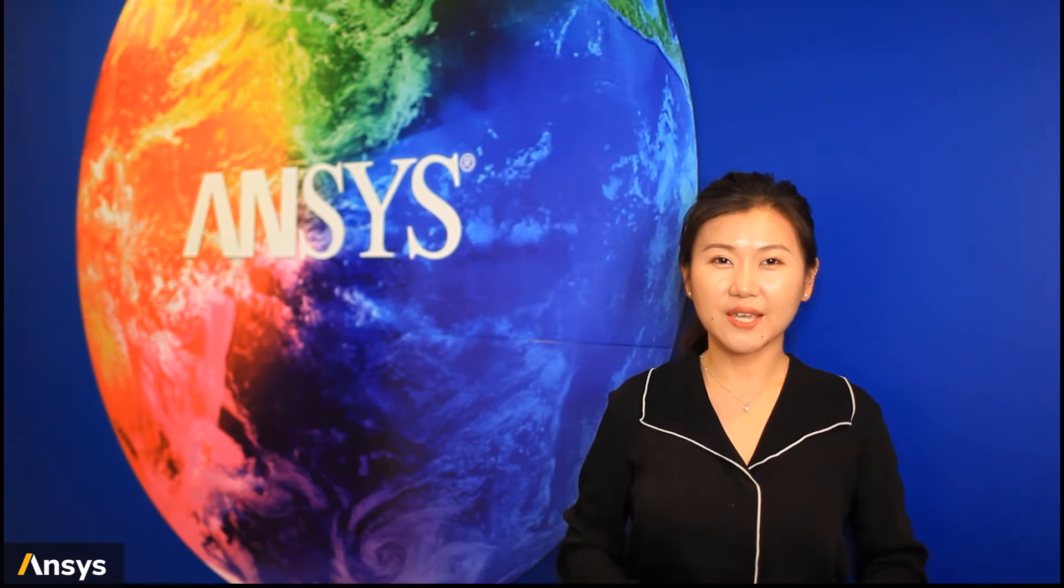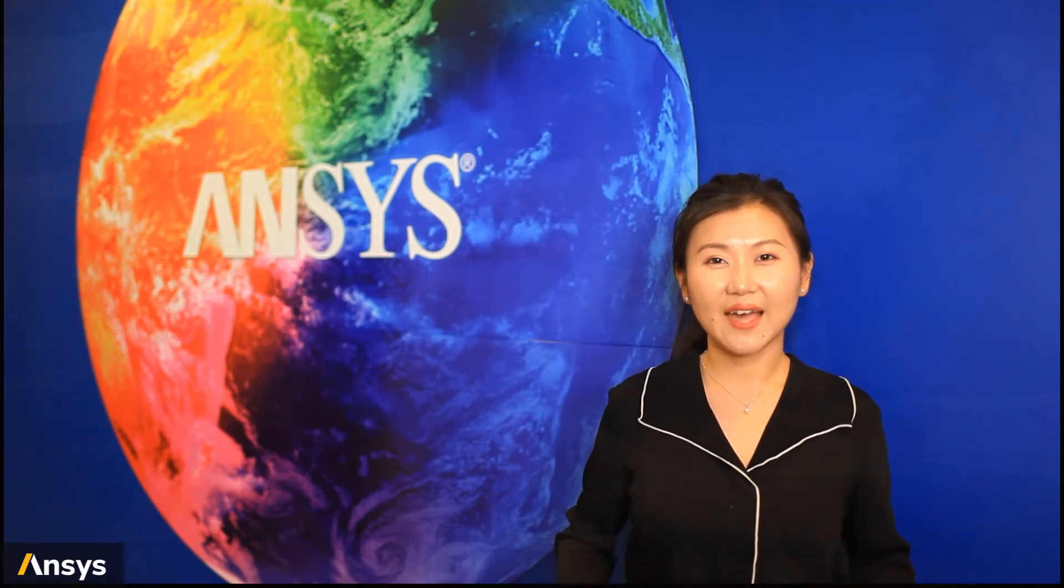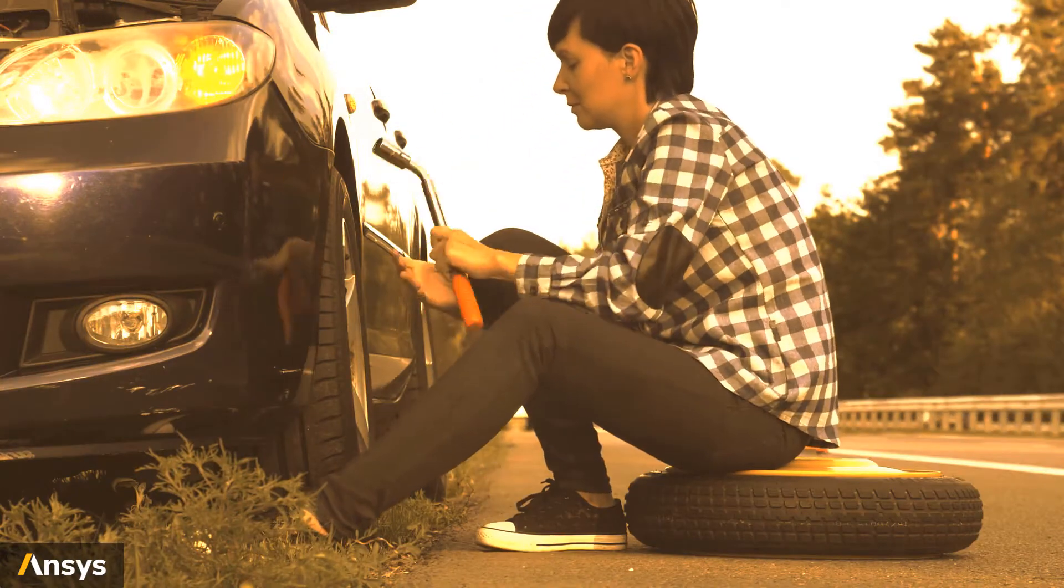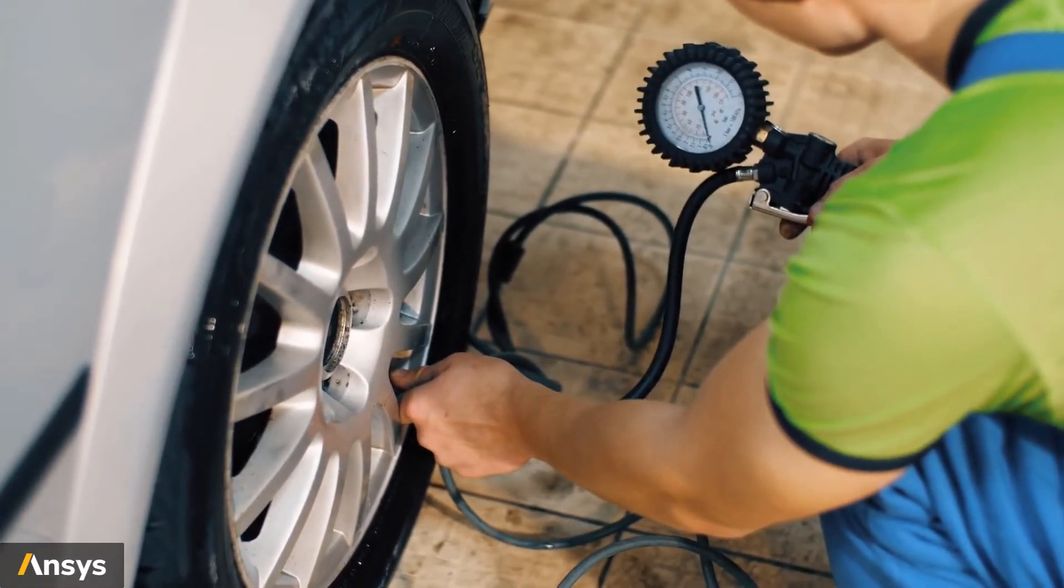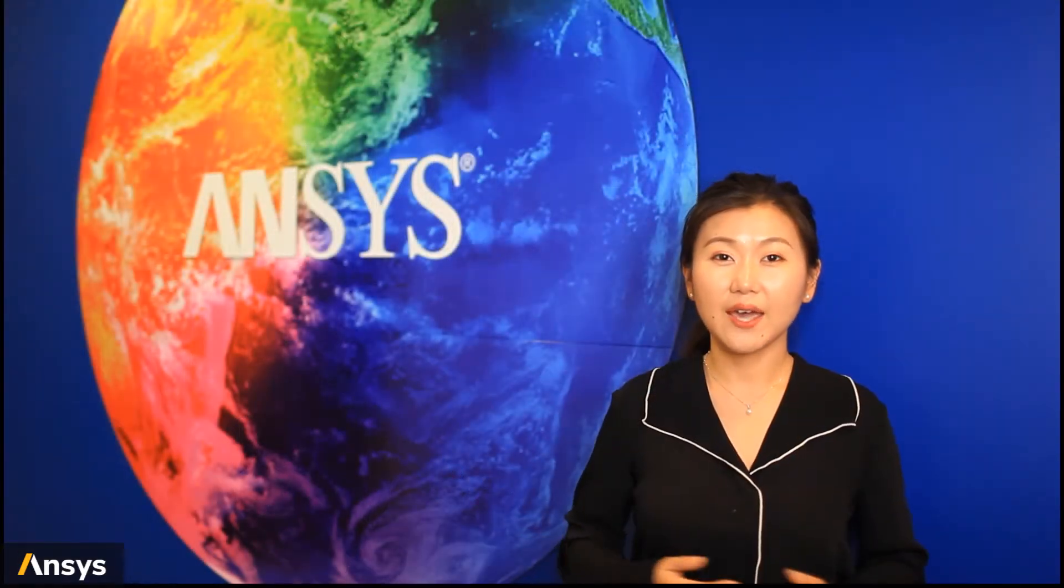We know that materials can go through deformation under temperature change. You might find that in summer, hot weather can cause blowout of tires, and in winter, you will find the low tire pressure light is on in cold days. As the filling material, air expands and contracts with temperature change.